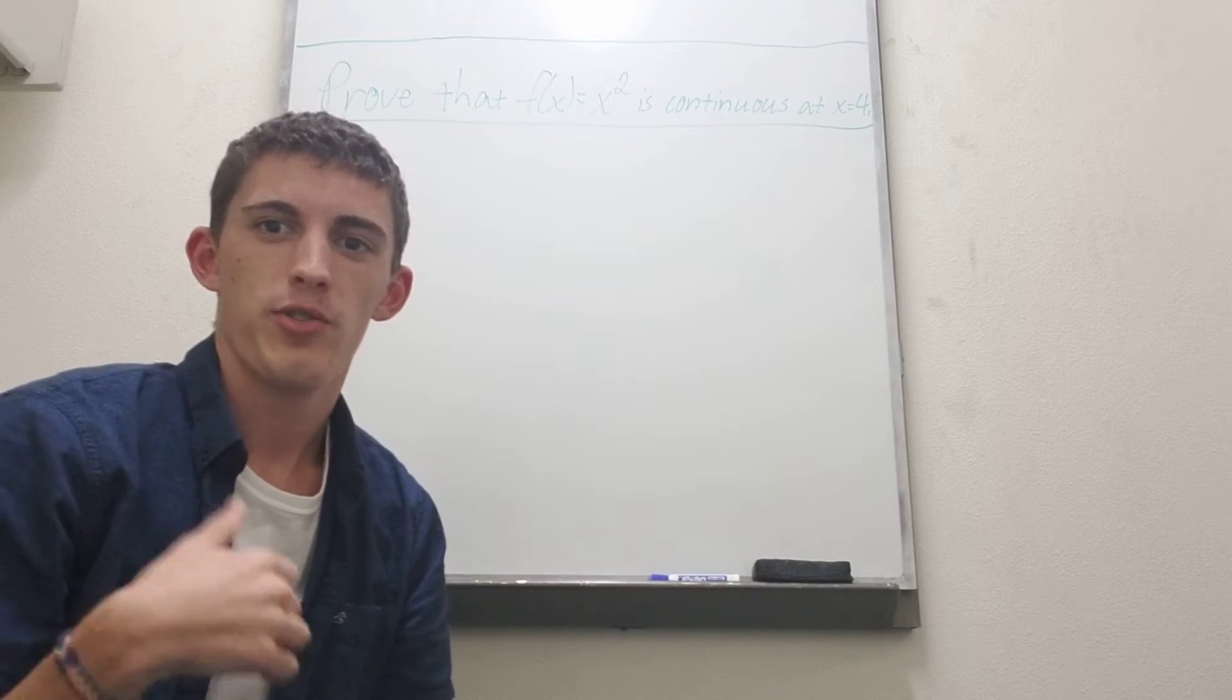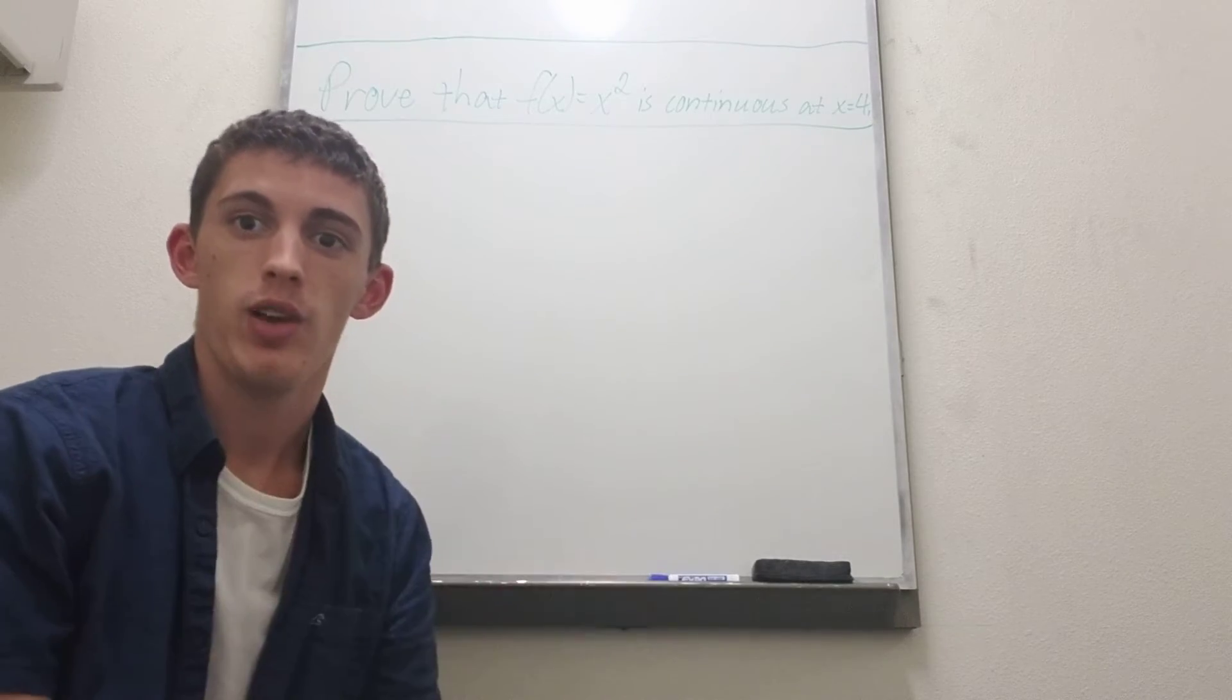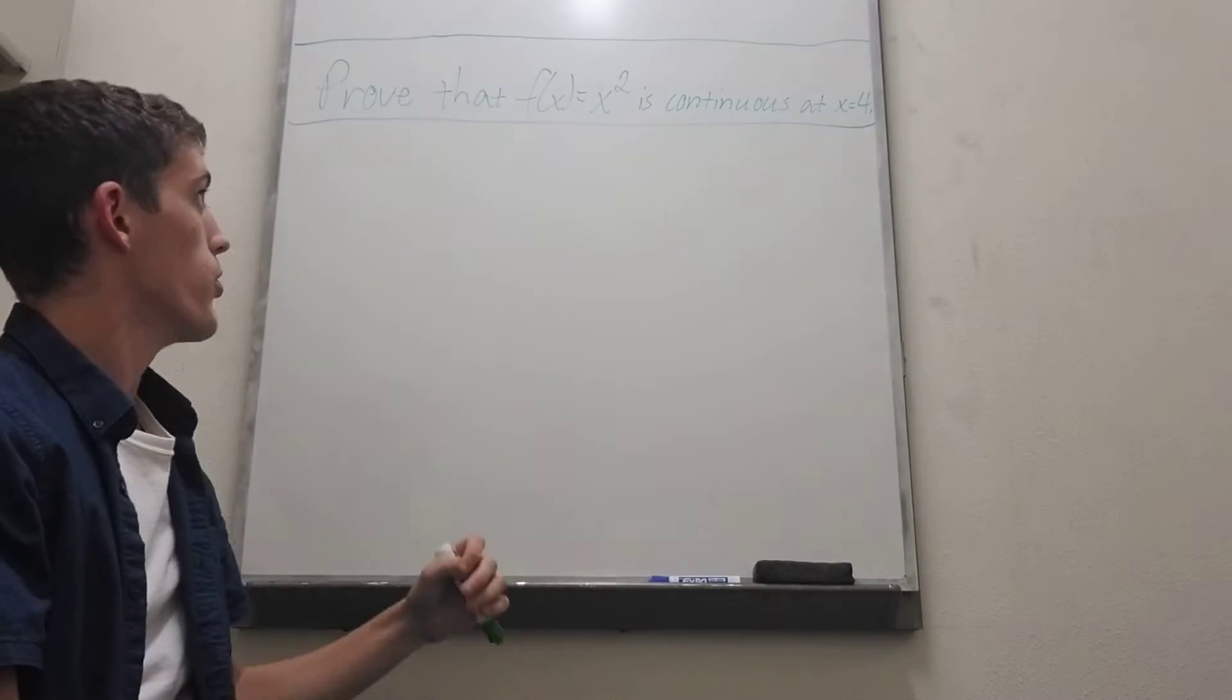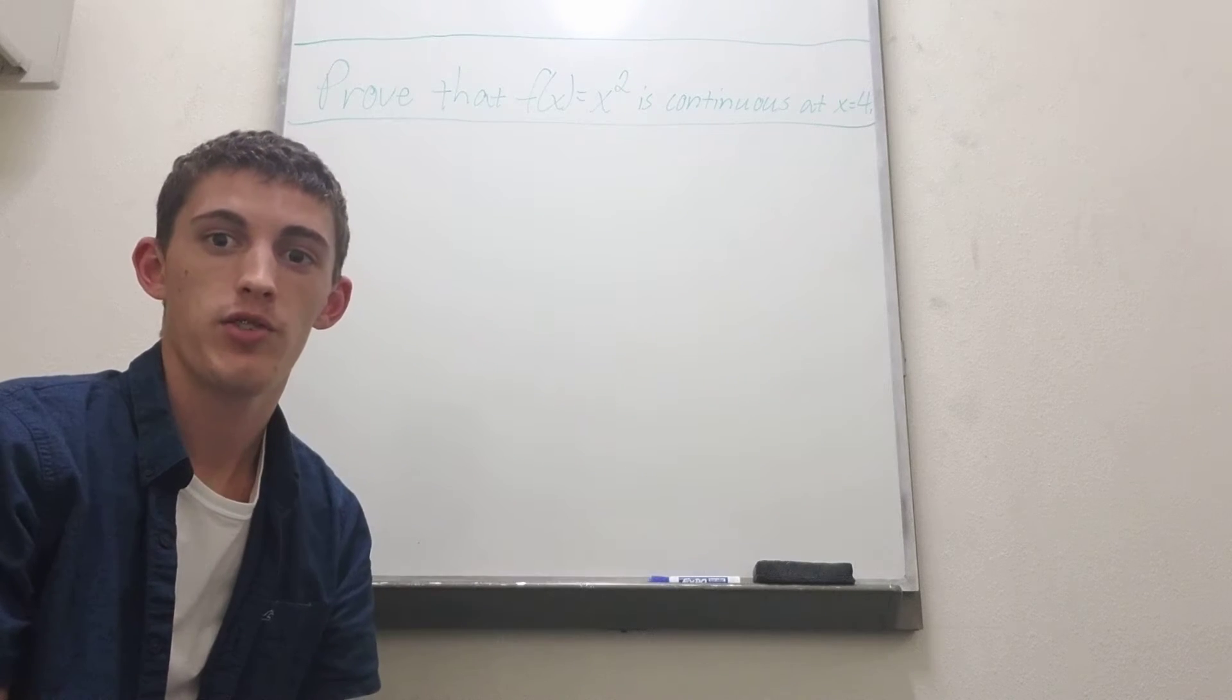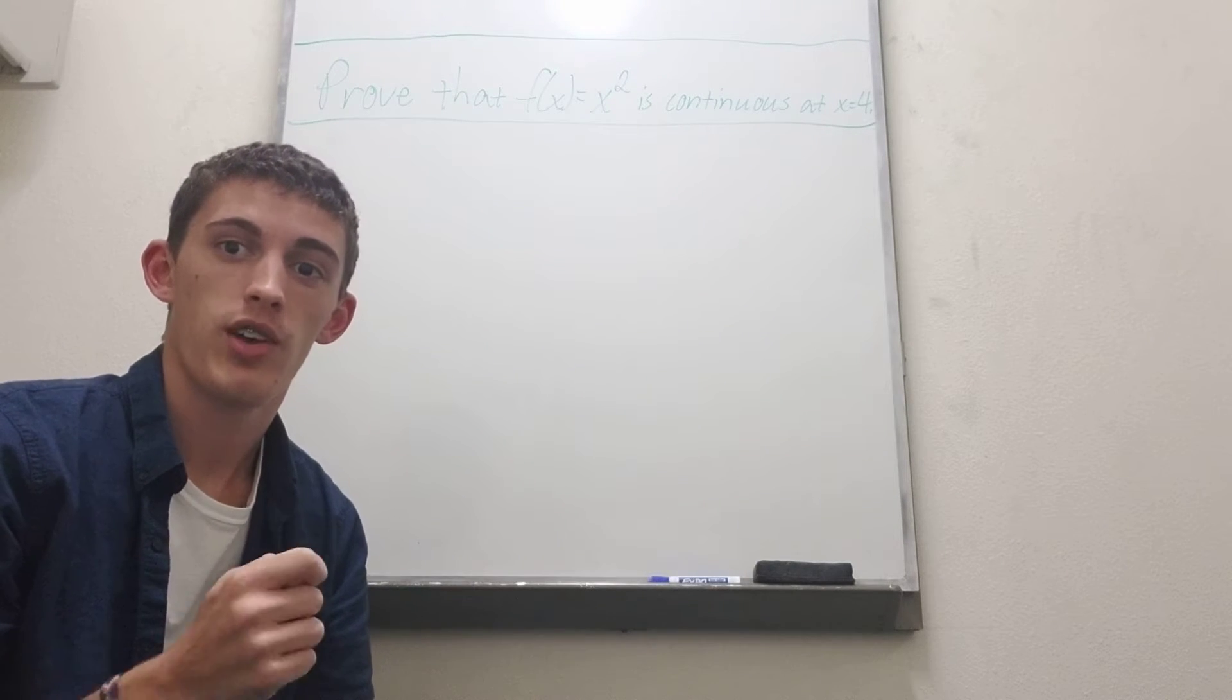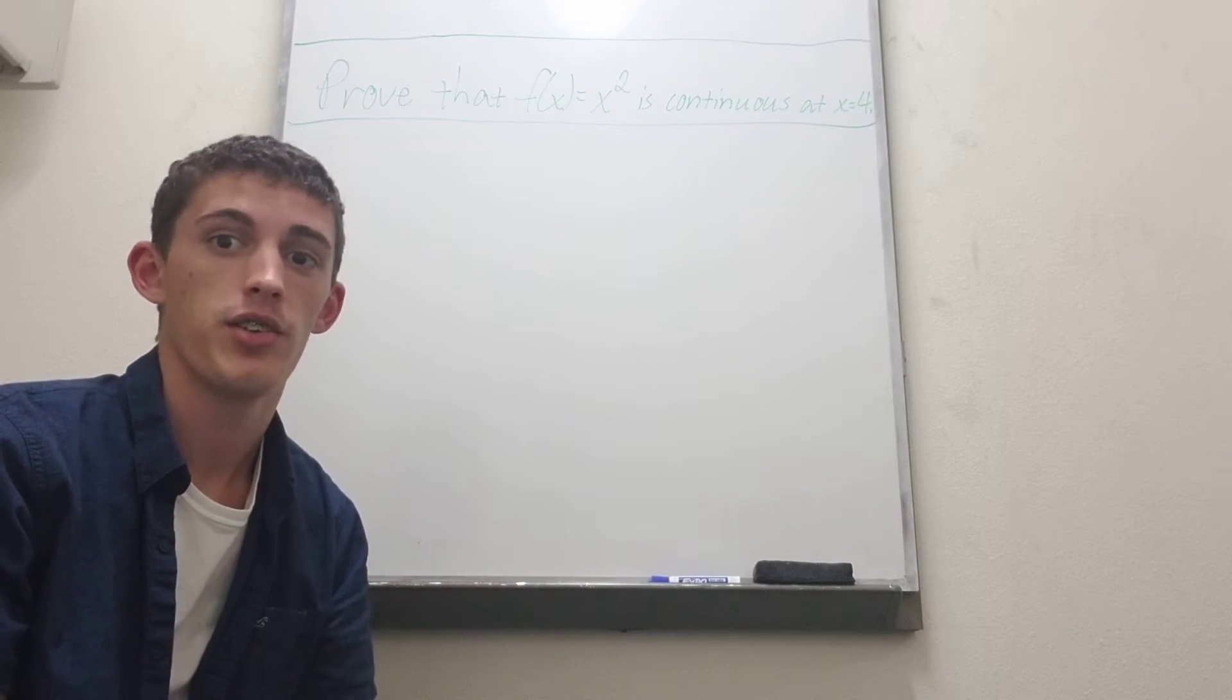Hello, my name is Tyler Russell and today we're going to be going over a simple analysis problem. We're going to prove that the function f of x equals x squared is continuous at the point x equals 4 using the epsilon delta definition.